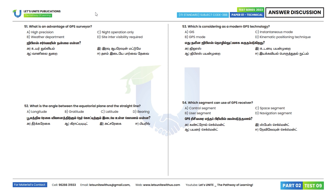Question 51: What is an advantage of GPS survey? The advantage of GPS survey is high precision. Option E is the correct answer. Next, question 52: What is the angle between the equatorial plane and a straight line?